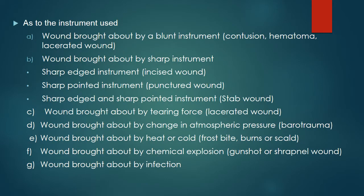As to the instrument used: wounds brought about by a blunt instrument can cause contusion, hematoma, or lacerated wound. Wounds brought about by a sharp-edged instrument cause incised wound; a sharp pointed instrument causes punctured wound; a sharp-edged and sharp-pointed instrument causes stab wound. Wounds brought about by tearing force create lacerated wounds; by change in atmospheric pressure can cause barotrauma; by heat or cold can cause frostbite, burns, or scald wound; by chemical explosion or gunshot can cause sharp nail wound; and by infection.